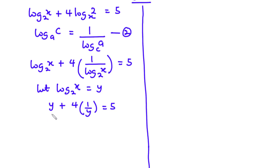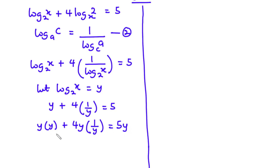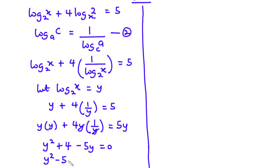Now let's find the possible values of y. We multiply each term by y: y times y plus 4y times 1 over y equals 5 times y. This becomes y squared plus 4 minus 5y equals 0, so we have y squared minus 5y plus 4 equals 0.